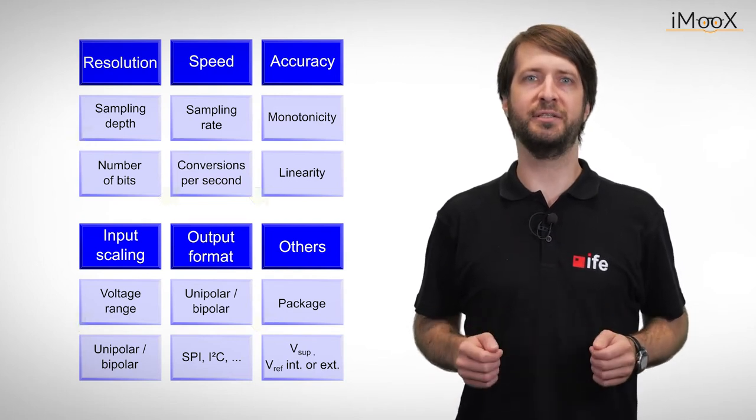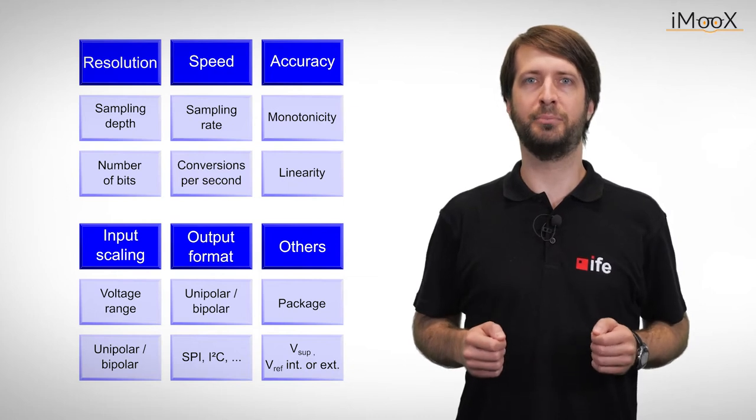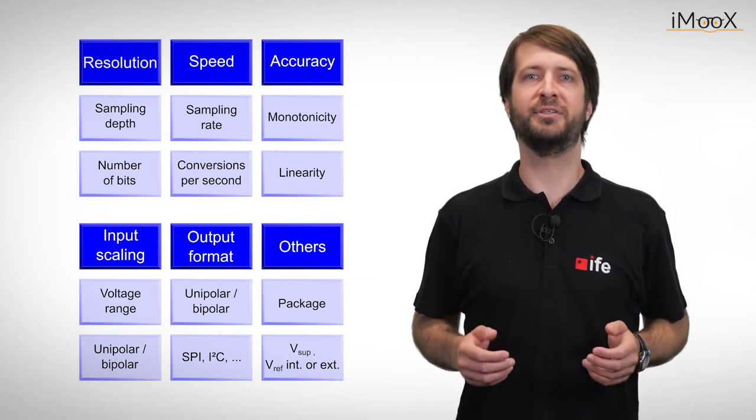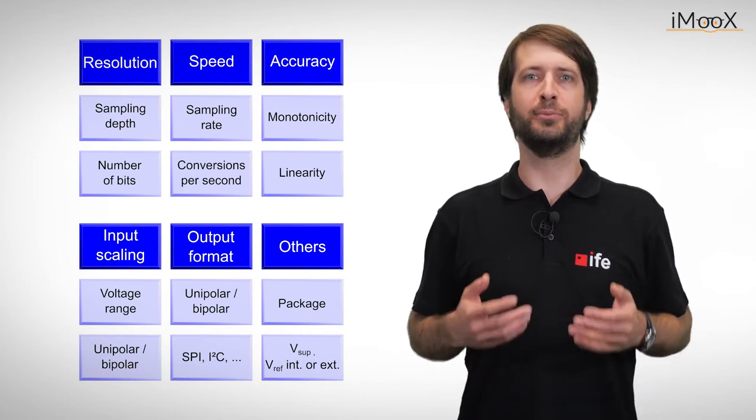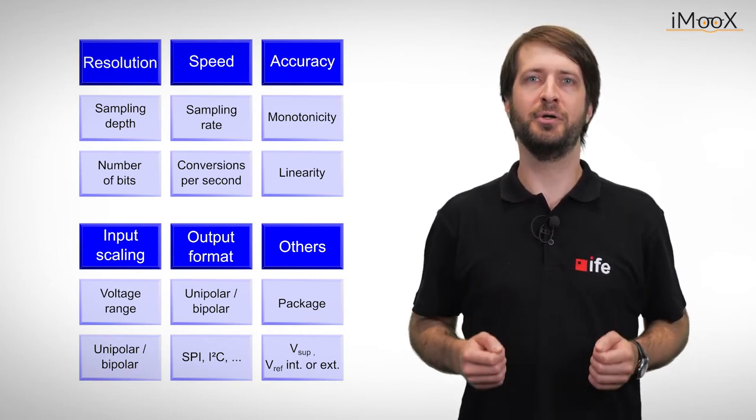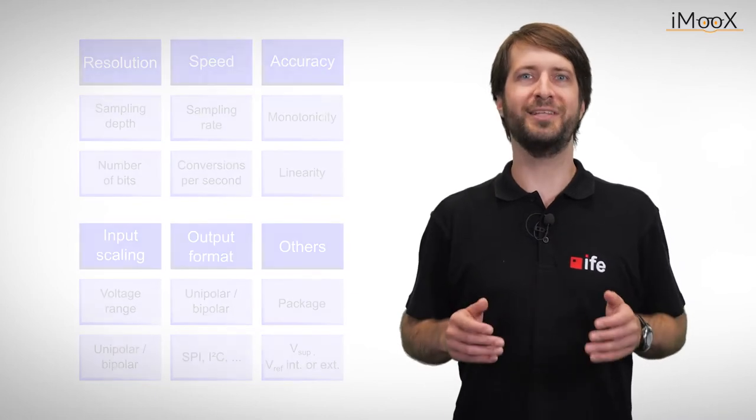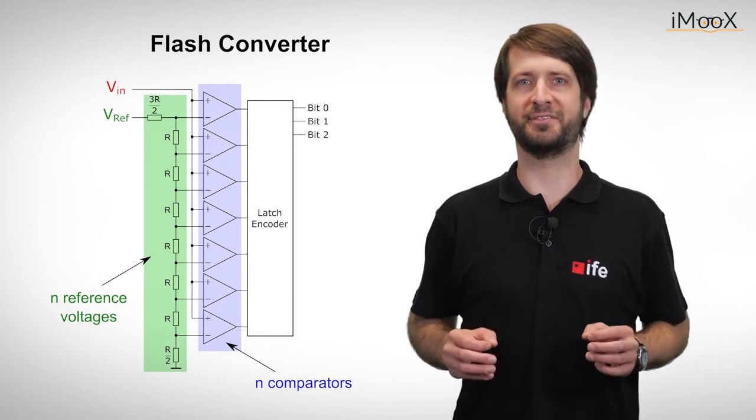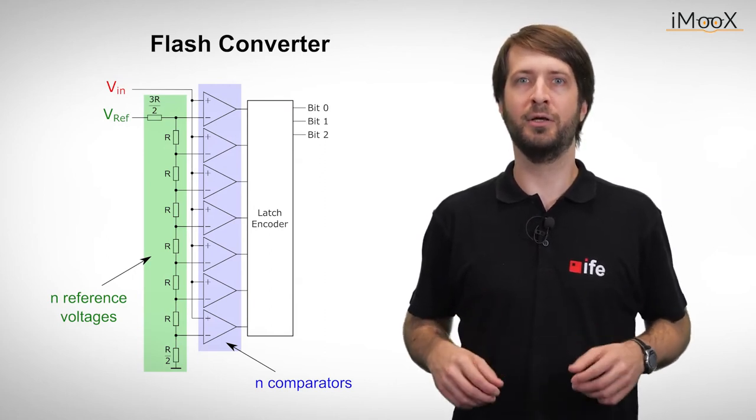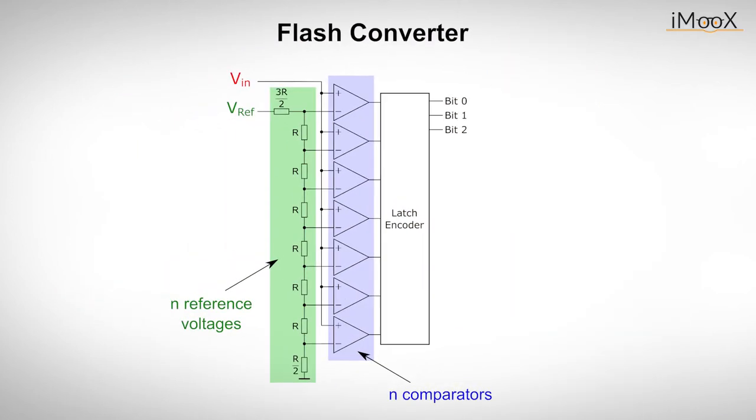To fully understand the upcoming chapter, you will need some basic knowledge about comparators, which we have covered in our video on operational amplifiers. If you want to refresh your knowledge before, we have put some links in the video description. Now it's time to get to know some topologies, and we will start with the fastest one, the parallel, or even a better name, the flash converter.